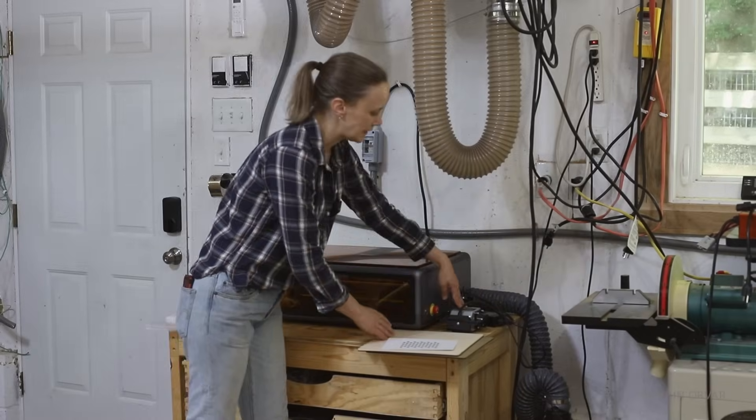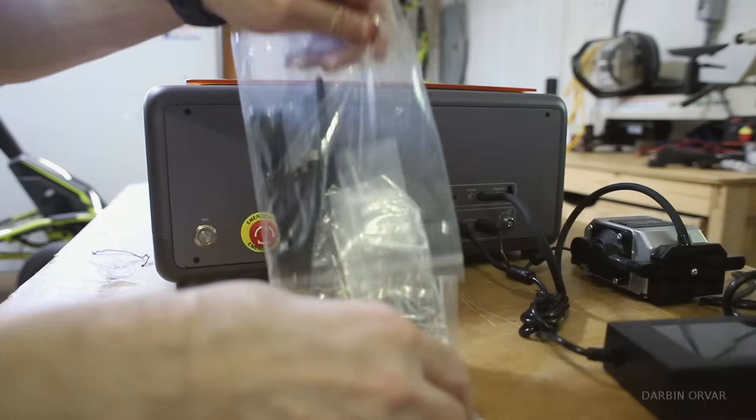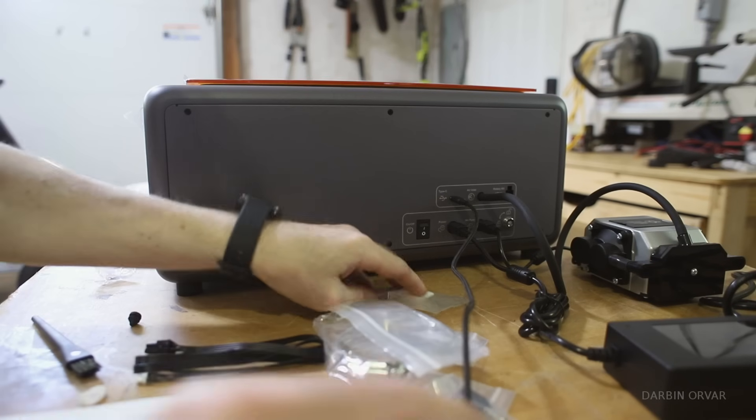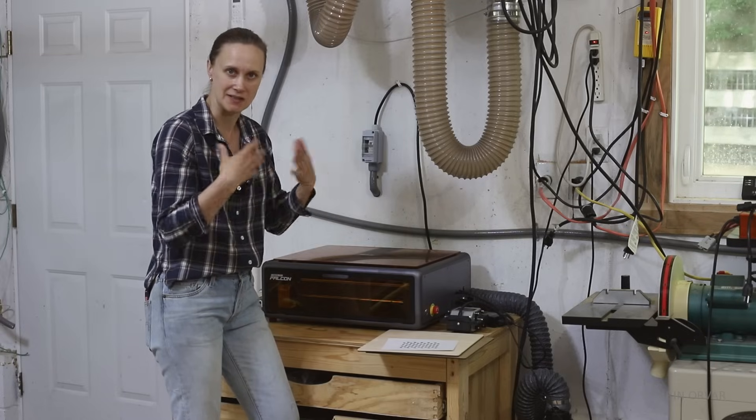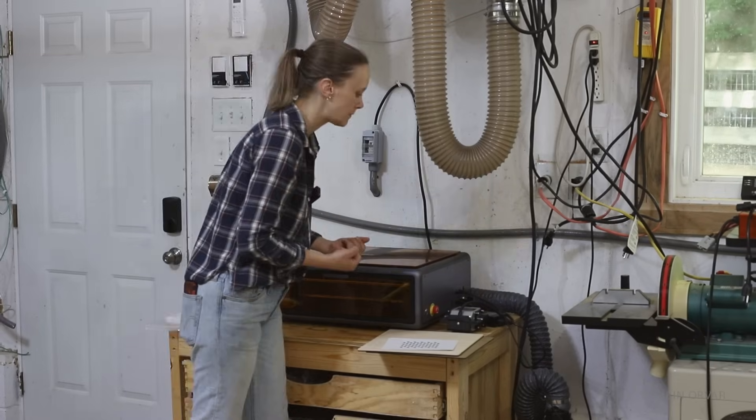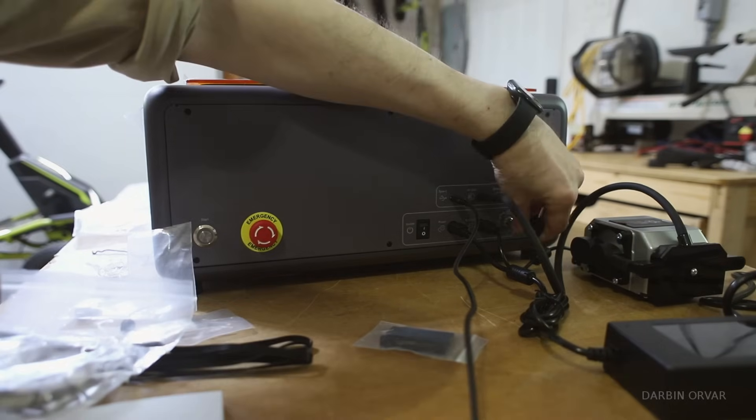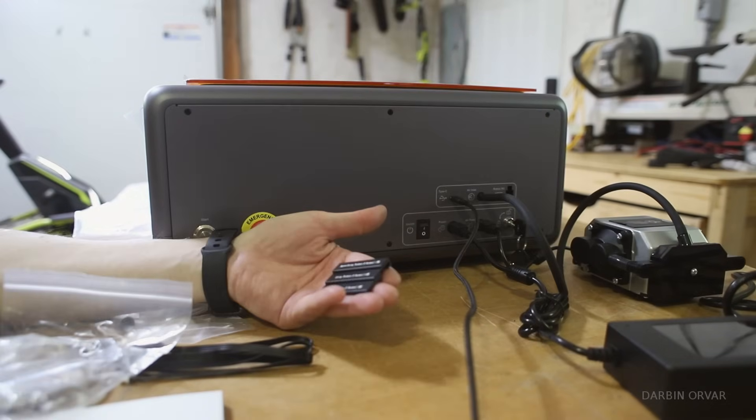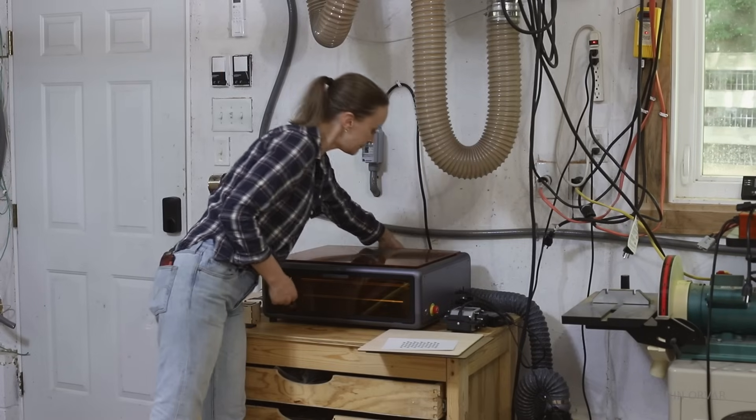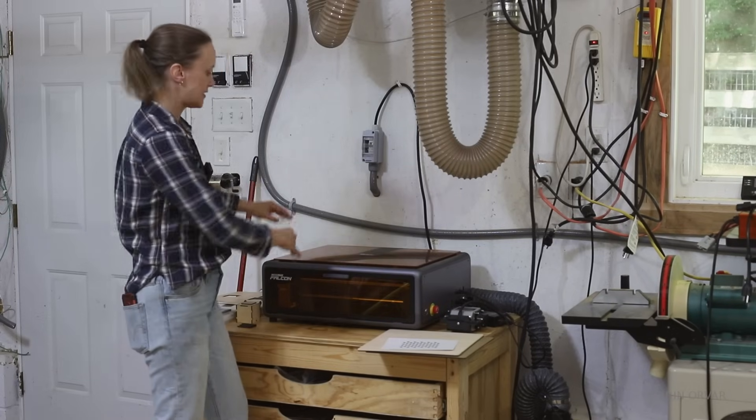On the right side here we have the air assist, which basically blows away dust from the nozzle to make a cleaner cut and make sure there's not too much smoke and burning. There's a built-in fan in the back that sucks air out.